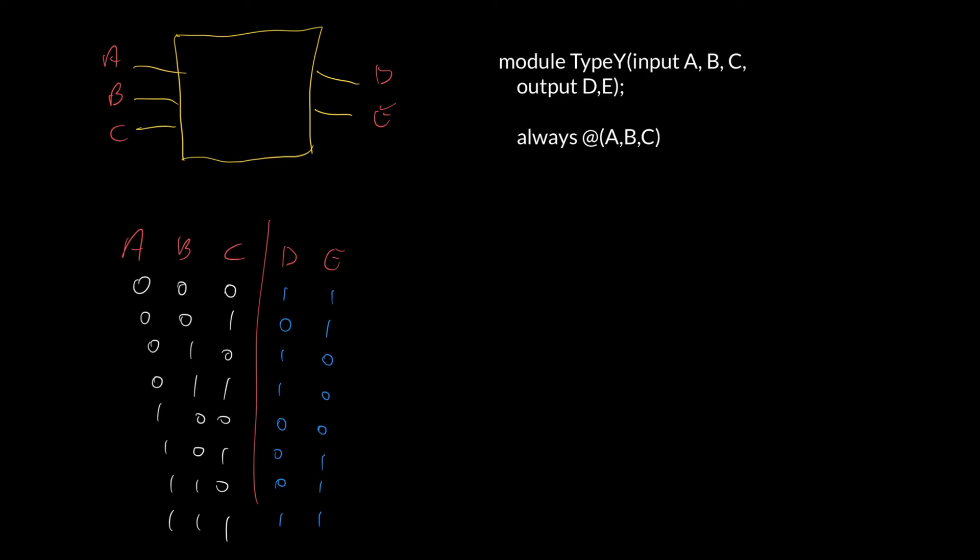Now, if you want to future-proof your code in case you add more things, you could have a begin and an end statement here. That will allow you to do more than one thing when A, B or C change. If we're trying to be efficient, though, in terms of typing, then a case statement's considered just a single statement. Hence, we don't actually need the begin and end if we follow the always immediately with a case statement.